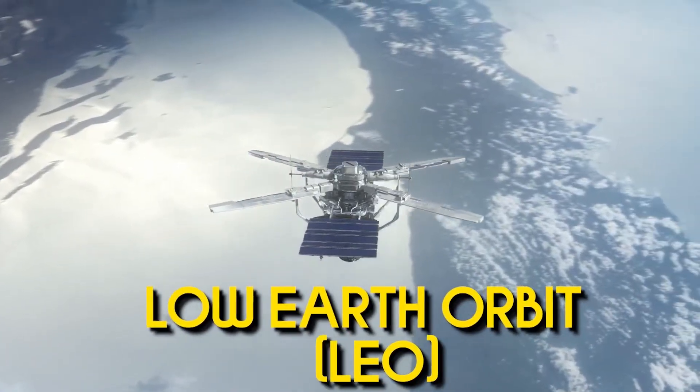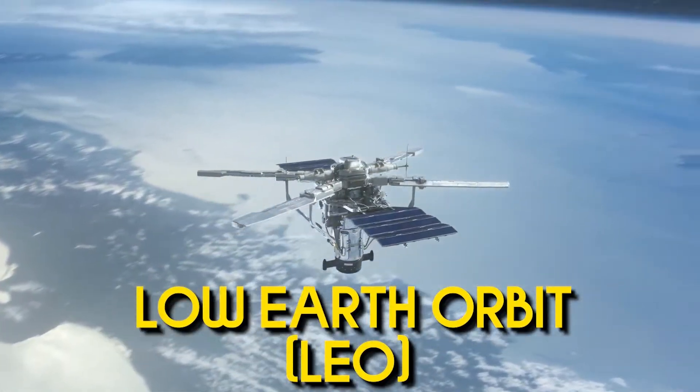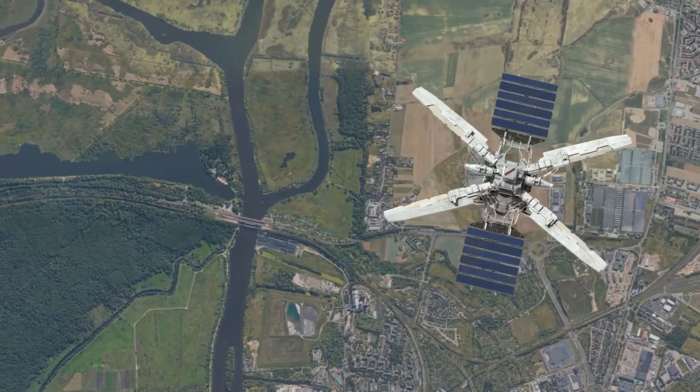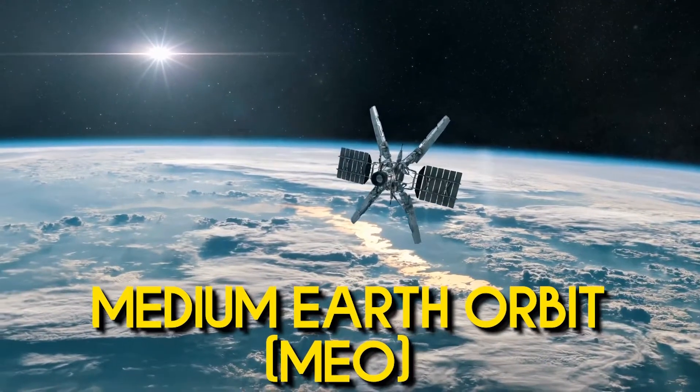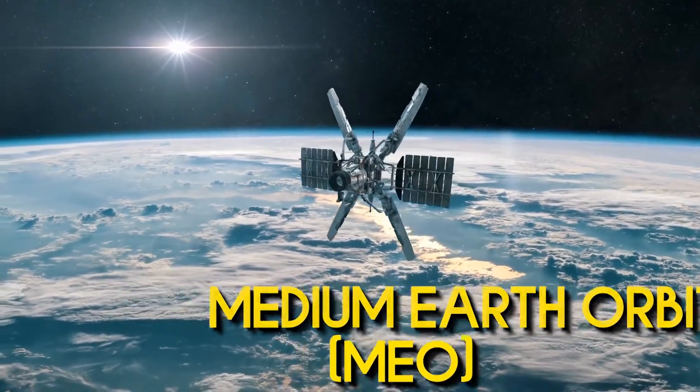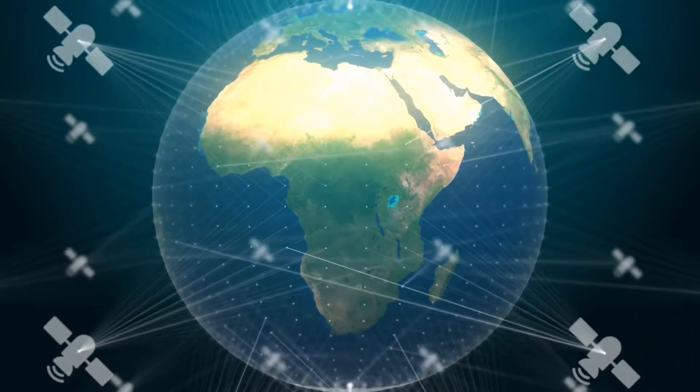Low Earth Orbit, or LEO, is close to Earth and suitable for detailed imaging and science missions. Medium Earth Orbit, or MEO, is higher and commonly used for Global Positioning Systems, or GPS.